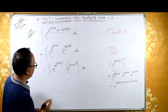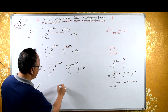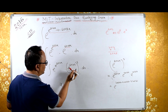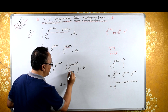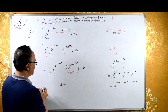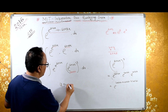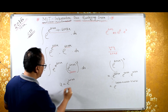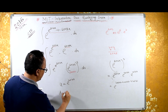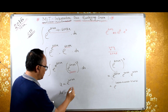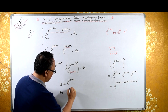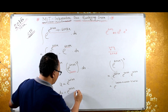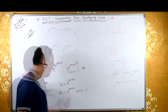Now if I substitute u equals to e raised to 2016x — that is this indices part, this something raised to power — then my du is: by the e raised to x differentiation theorem, e raised to 2016x, into d by dx of 2016x, which is 2016.